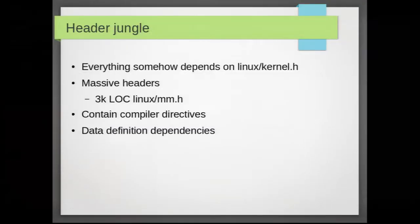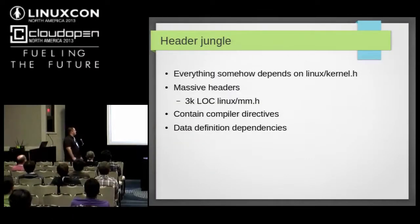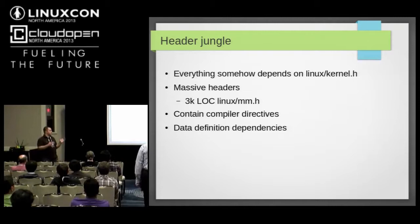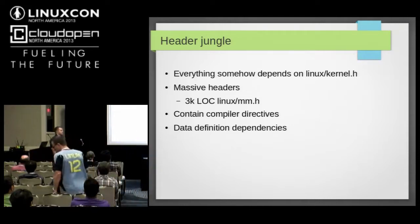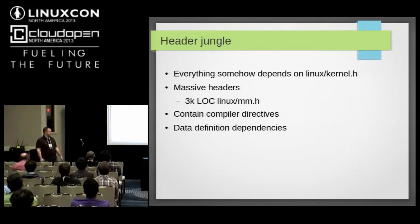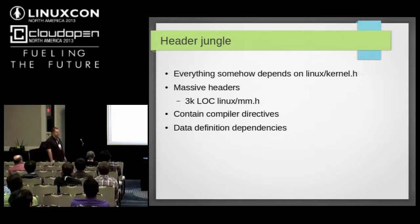Let's talk about the problems we mentioned before. The first one was the header jungle. There are a couple of sub-problems. First is header dependency, which is a mess — somehow everything depends on everything else, even though it shouldn't, and everything ends up depending on kernel.h, which is very userspace-unfriendly. Next we have those massive monolithic headers. They started out pretty small when the kernel started, but no one ever bothered to split them into manageable parts, so you end up with 3,000 lines of code in a massive mm.h, which is impossible to use anywhere else.